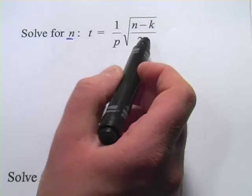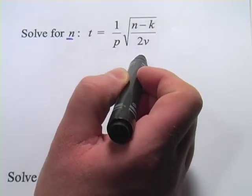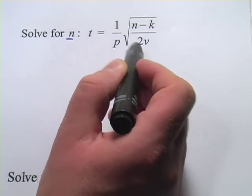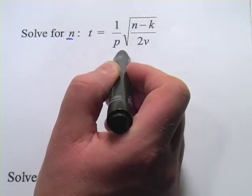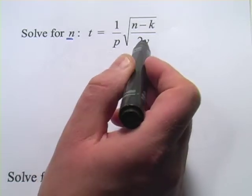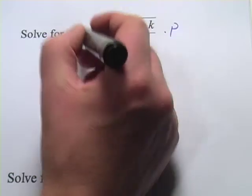The first thing I notice is that we have this big radical sign, and we're going to have to get rid of that at some point by squaring both sides. But before I do that, I want to get it alone. So I've got 1 over p multiplied by that radical sign. The way I can get this alone is simply multiplying both sides by p.